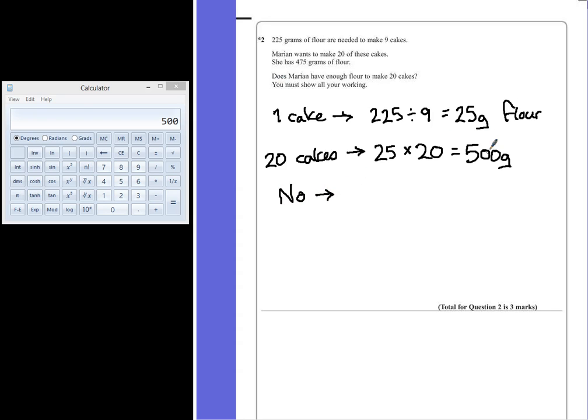Make sure that you include some reference to why she hasn't got enough. So in this case she needs, how much more? Well she needed 500, she's only got 475, so she needs 25 grams more.